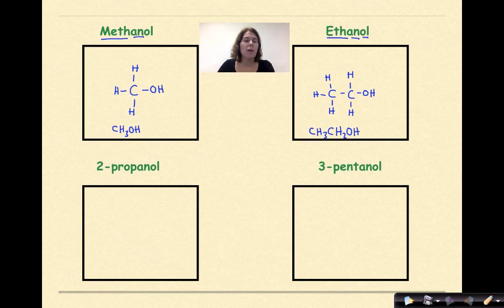Let's do 2-propanol. I'm going to start with prop, that means three carbons: one, two, three. -An indicates my single bonds between those carbons, and then -ol saying you have an alcohol here. But now I have a number, which means I should number my carbons. So one, two, three. That means off of the second carbon, I'm going to have an alcohol group.